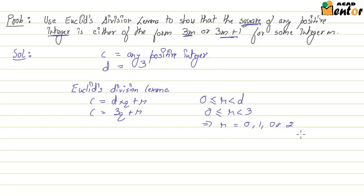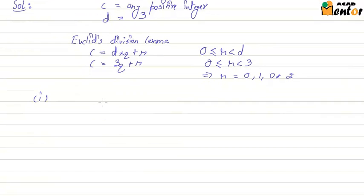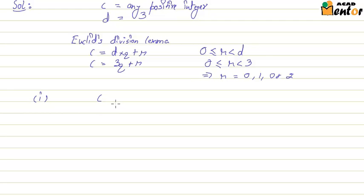Let's take the first case where r is 0. We have c equal to 3q plus 0, which is 3q. Now we are squaring both sides, so c square equals 3q whole square, which will be 9q square. Remember we have to express c square in terms of either 3m or 3m plus 1. So this becomes 3 multiplied by 3q square, or it is 3m where m is 3q square.